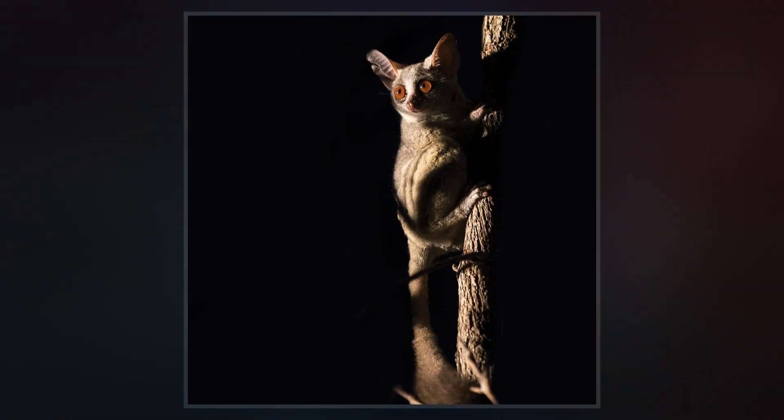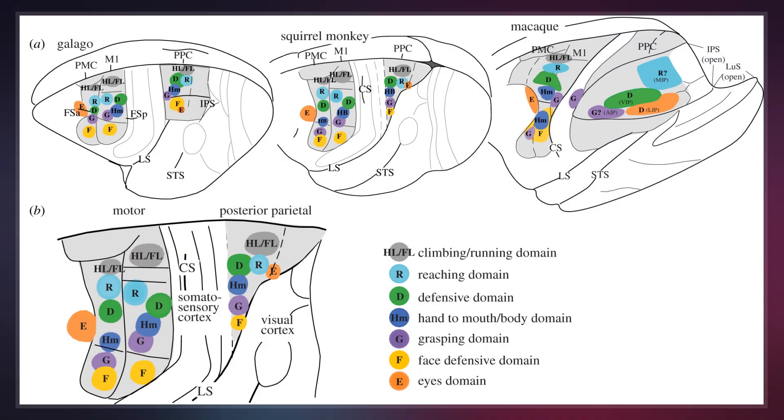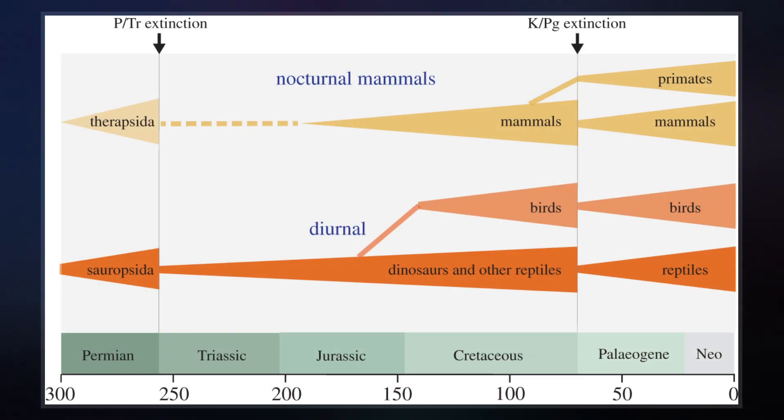While some mammal groups have later evolved to fill diurnal niches, the approximately 160 million years spent as nocturnal animals has left a lasting legacy on basal anatomy and physiology, and most mammals are still nocturnal.